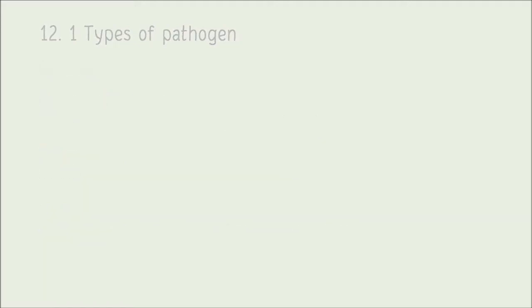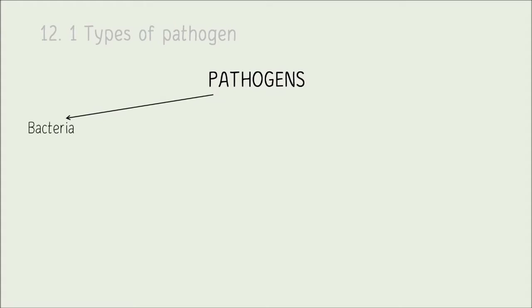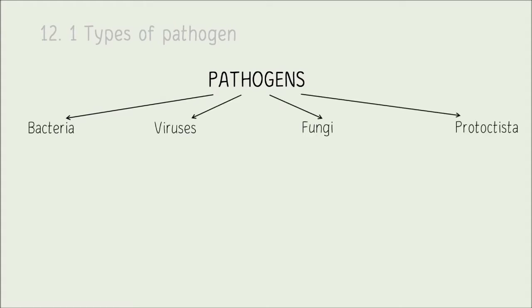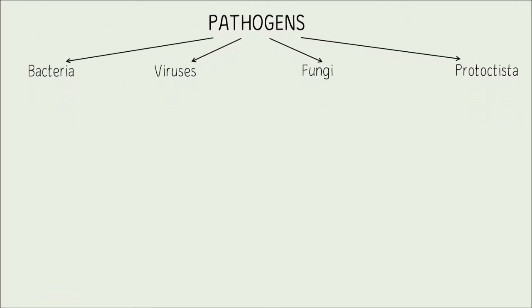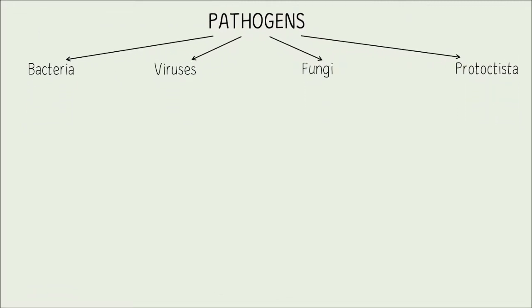So what types of microorganisms cause infectious communicable disease? We have bacteria, viruses, fungi, and protoctista — these are the four main types. We'll take them one by one.